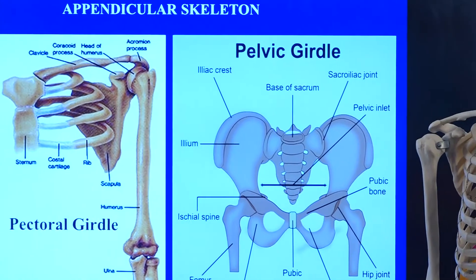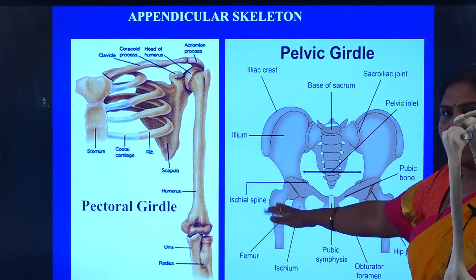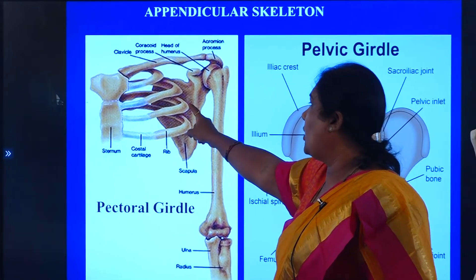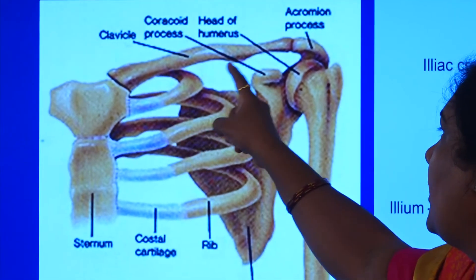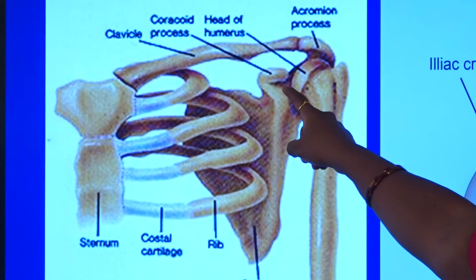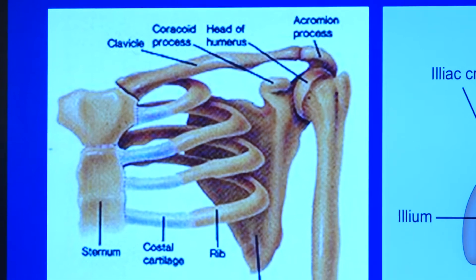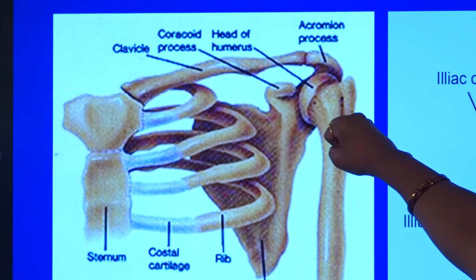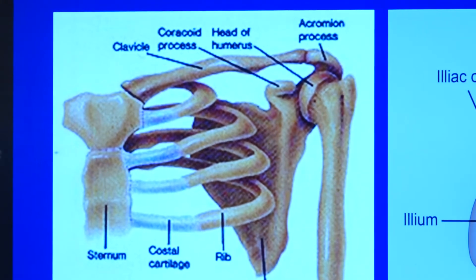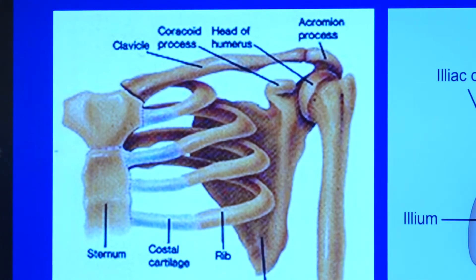Now we come to the appendicular skeleton. In the appendicular skeleton we find the pectoral girdle and the pelvic girdle. On the dorsal side there is a triangular structure called the scapula. Here there is a collar bone — it is the clavicle. Then there is a coracoid process and a small acromion process. This is the humerus, the bone of the arm. There is a ball-like structure called the head of the humerus, which is locked into the glenoid cavity — this is called a ball and socket joint.